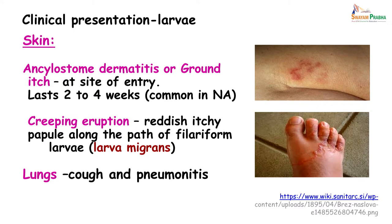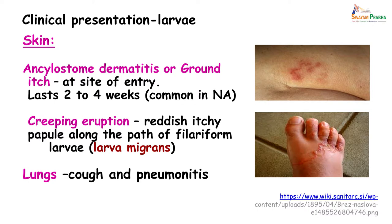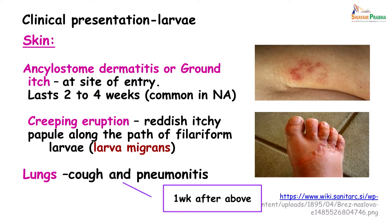Creeping eruption consists of reddish, itchy papules with a serpiginous appearance appearing along the path of travel of the filariform larvae, also referred to as larva migrans. These larvae, 1 to 2 weeks after entry, burrow deeper and get into the subcutaneous venules, then travel to the heart and then to the lungs, where they produce cough and pneumonitis due to tracheal irritation — occurring about 1 week after the skin symptoms.